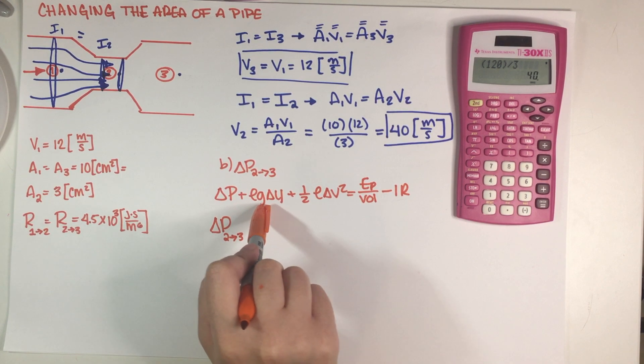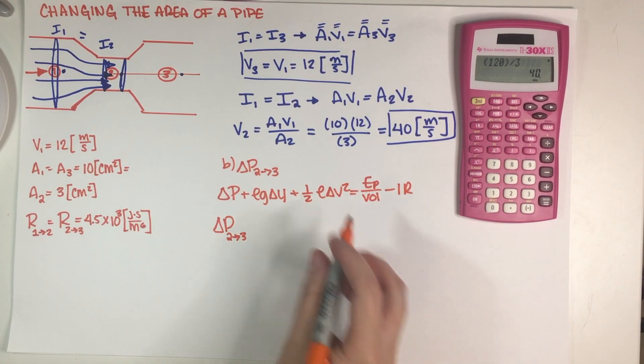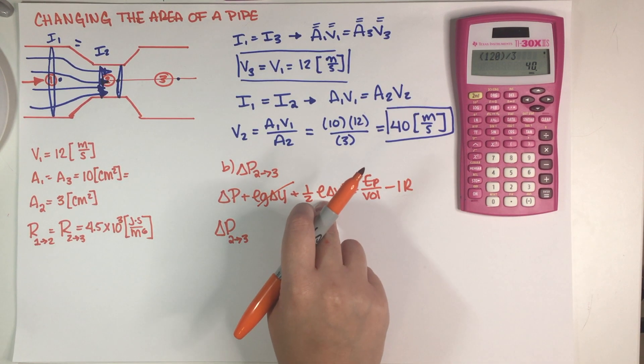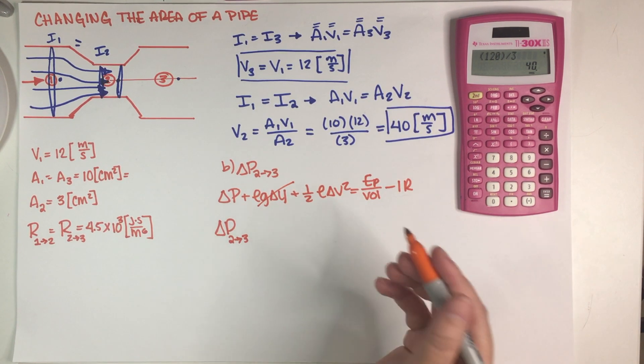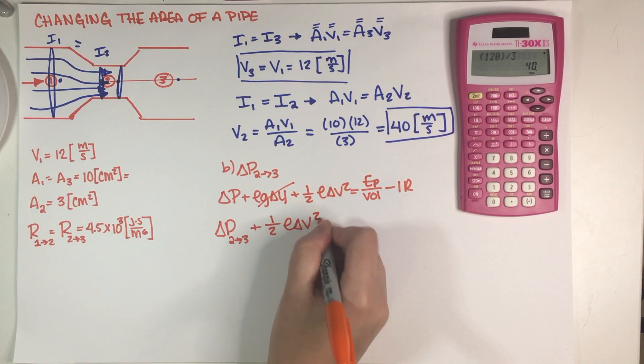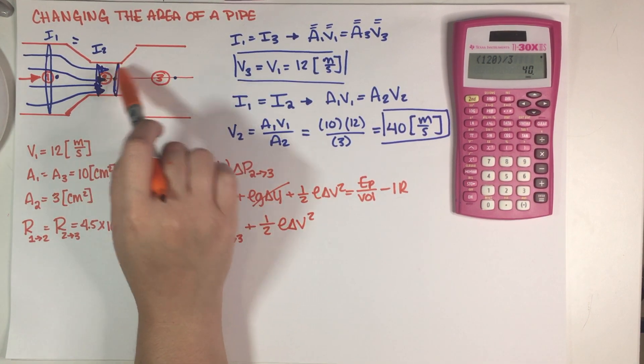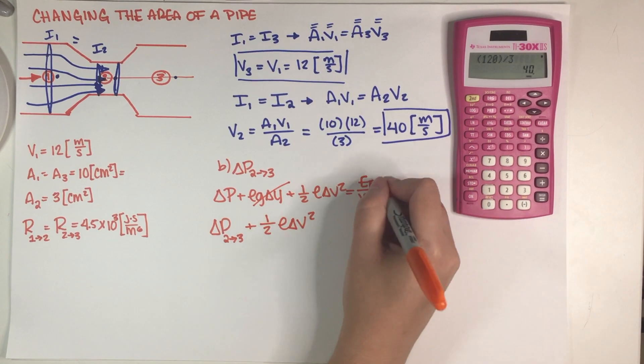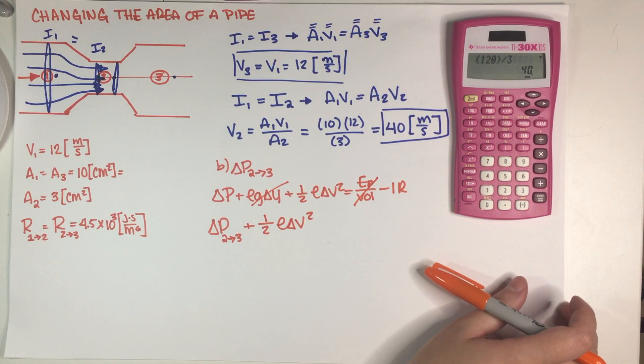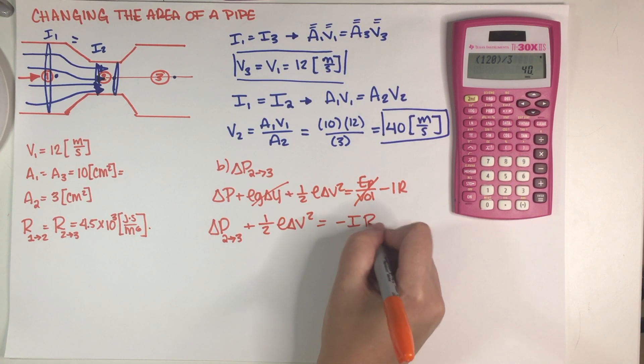So my complete Bernoulli equation, I'm just going to write it down. Let's see, delta P is going to stay obviously, this is what we want to find and I'm never going to cancel that out. This term is going to go away because I don't really have a change in height, points 2 and 3 are leveled up, so because I don't have a change in height this is equal to 0. This term is going to stay because I do have a change in area. This term is going to go away because I don't really have a pump in between these two points, so this is equal to 0. And this problem, yes we do have a resistance, it's over here, so this is equal to just negative IR.